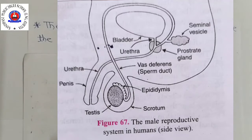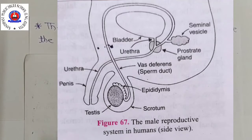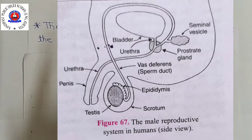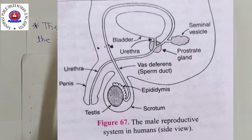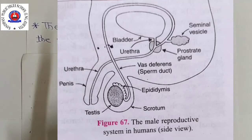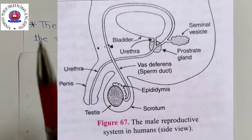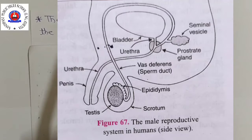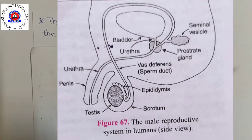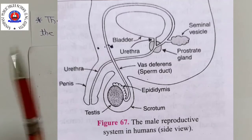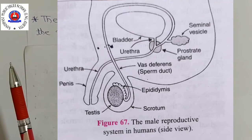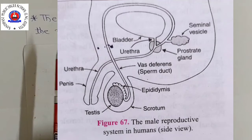Testes are the primary reproductive organs in males. They are oval-shaped organs which lie outside the abdominal cavity. A man has two testes. The function of the testes is to make the sex cells called sperms and also to make the male sex hormone called testosterone. The testes make sperms from puberty onwards throughout a man's life.